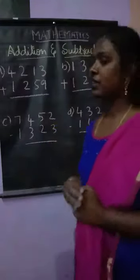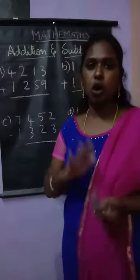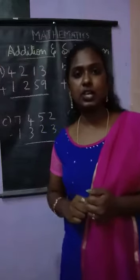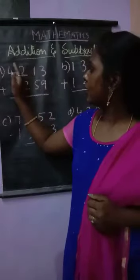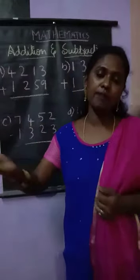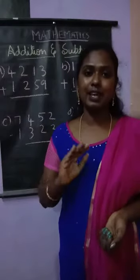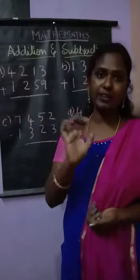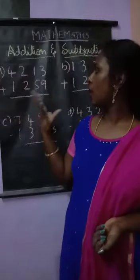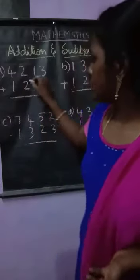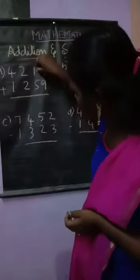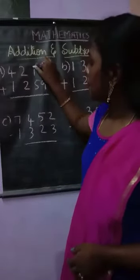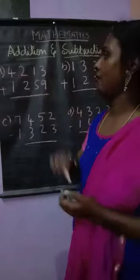Let us solve some problems. Students, always remember — here we are given 4-digit numbers for addition. Whenever we arrange the numbers, whether in vertical or horizontal form, the numbers should have some gap between them to avoid confusion, so that you will learn how to add each column. I have given a gap between each and every digit. Can you notice that?